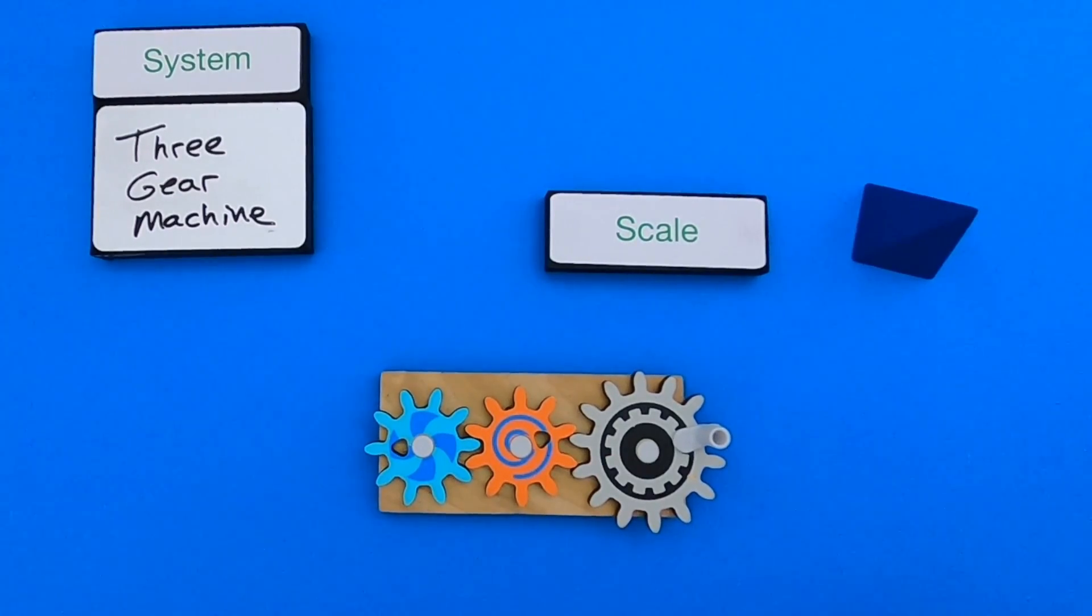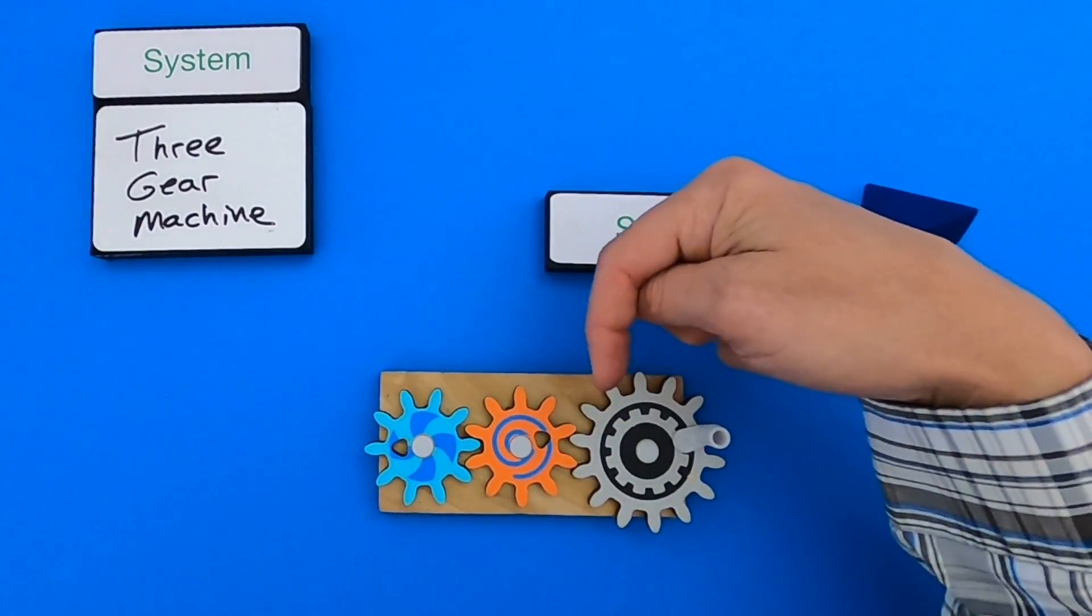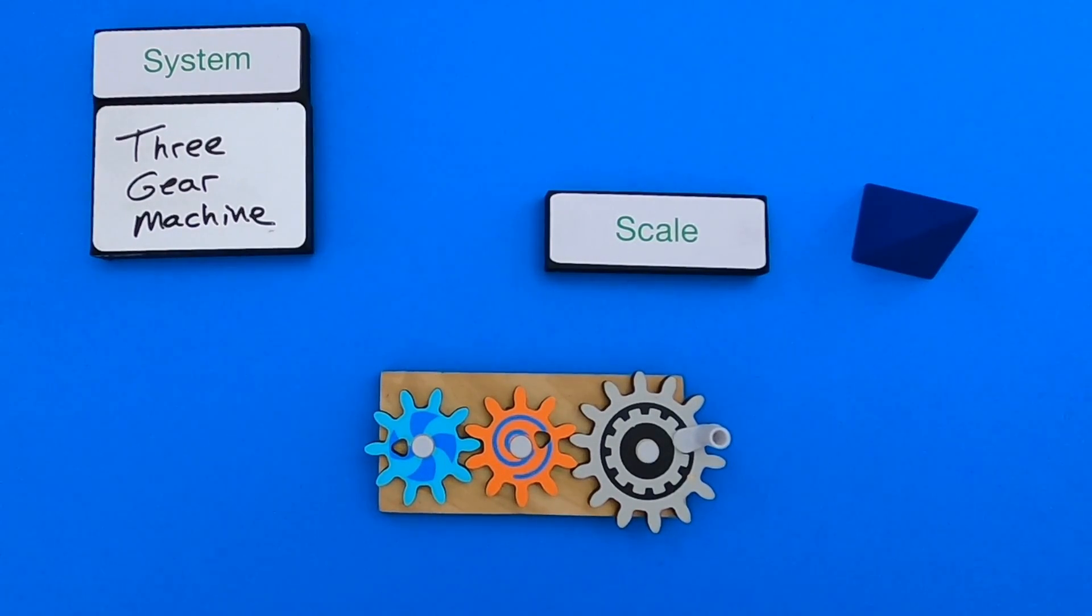What I'd love to have you do is now show me your thinking around relative scale using the three gears in this three gear machine. So pause the video. There's some thinking slides down below this video that you could use, or you could just write it out on a sheet of paper. Pause the video. Show me your relative scale with objects in this system, and then I'll show you my thinking.